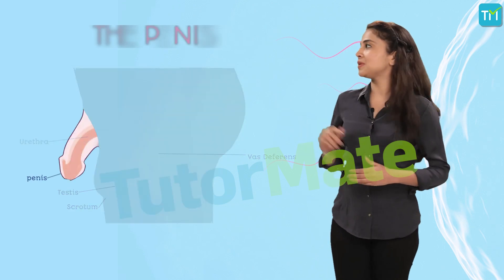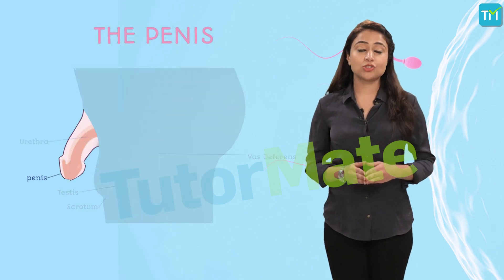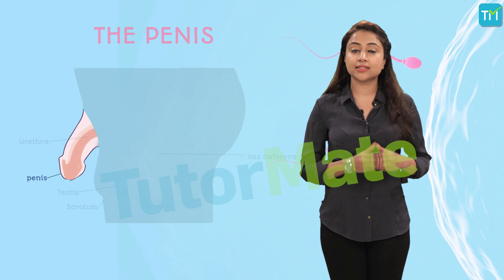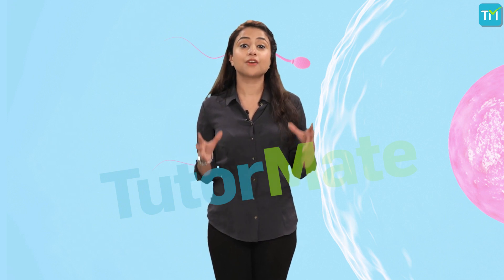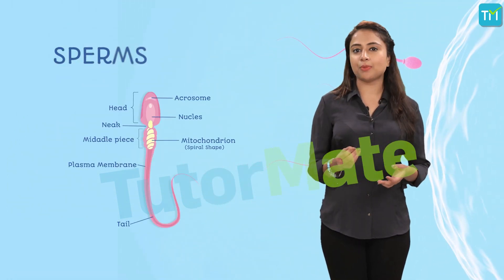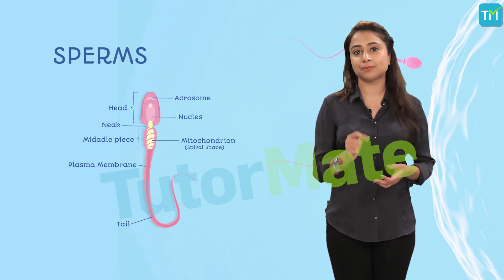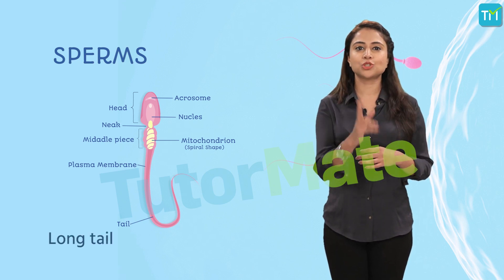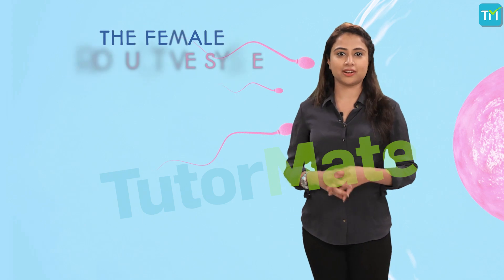Finally, the penis transfers the germ cells to the site of fertilization. Among the biological terms we came across, sperms are tiny bodies that mainly consist of genetic material and a long tail that helps them to move. That concludes the male reproductive system.